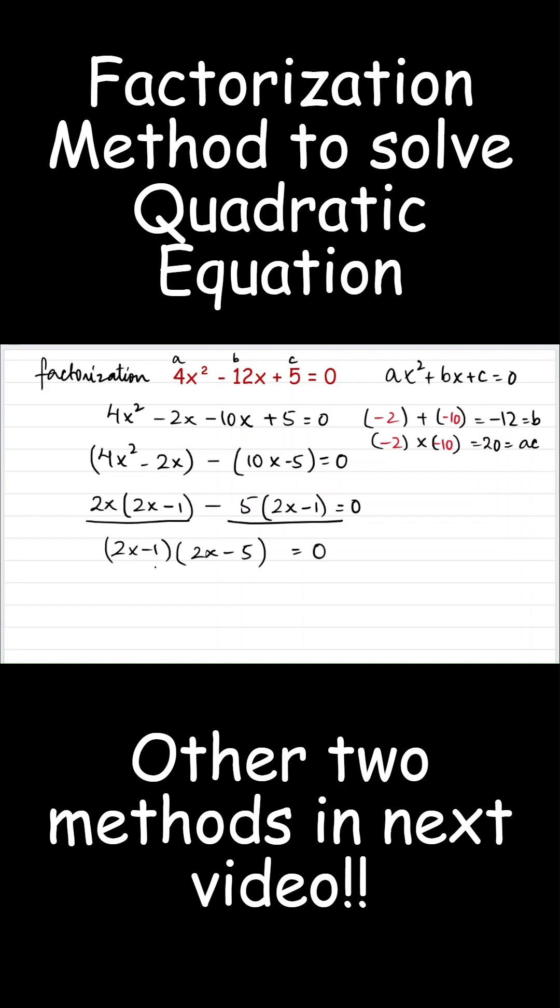Now, according to null factor law, whenever the product of two terms or two numbers is 0, then at least one of them must be equal to 0. So I get 2x minus 1 equals 0 or 2x minus 5 equals 0.